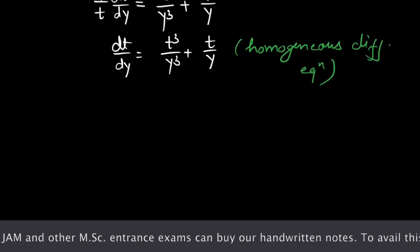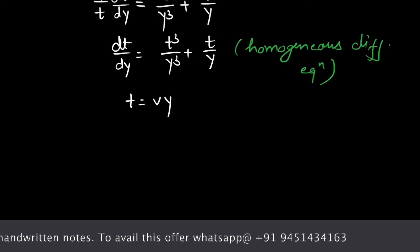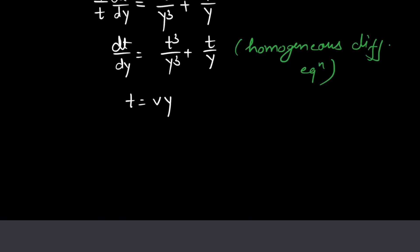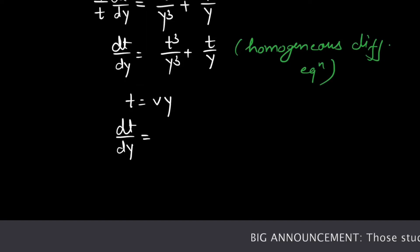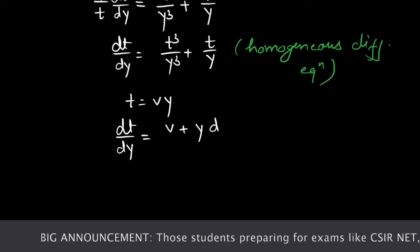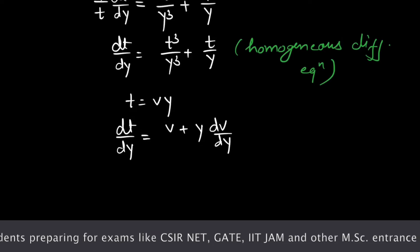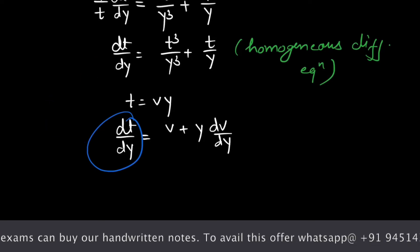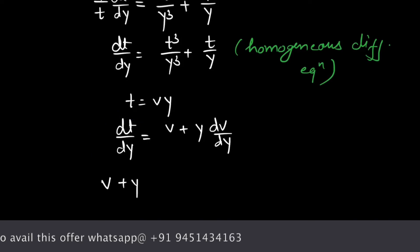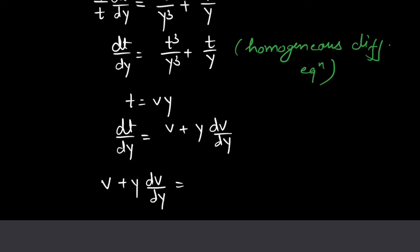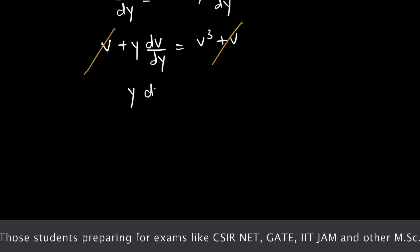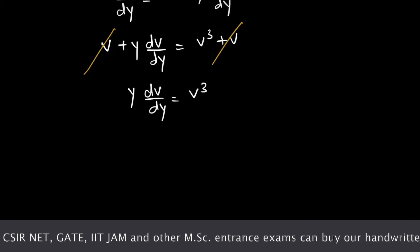This homogeneous differential equation can be solved by taking t equals vy. Differentiating, dt/dy equals v plus y dv/dy. Substituting this value into the equation, we get v plus y dv/dy equals v³ plus v. The v cancels out, leaving y dv/dy equals v³.